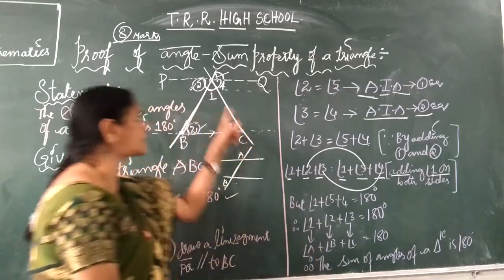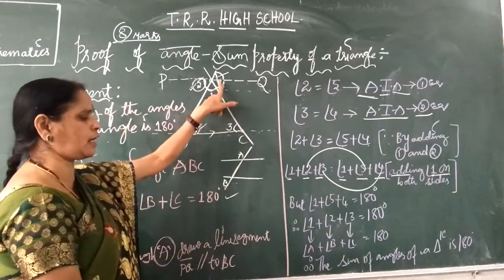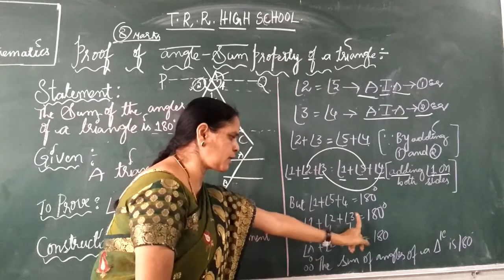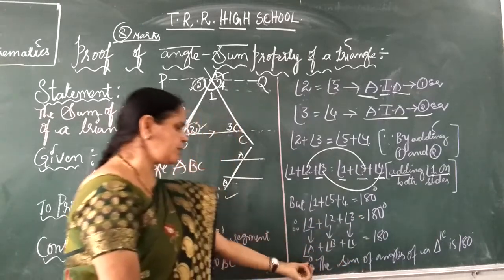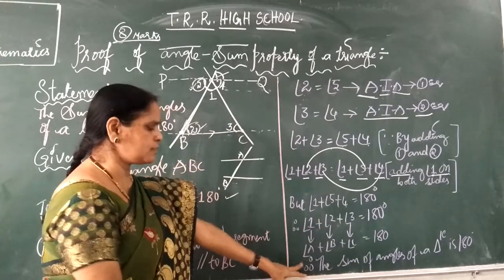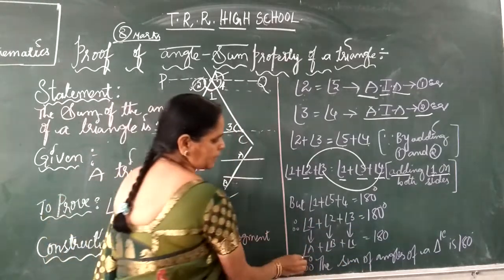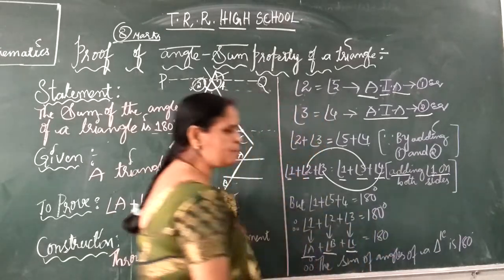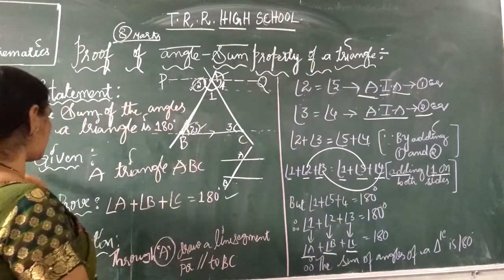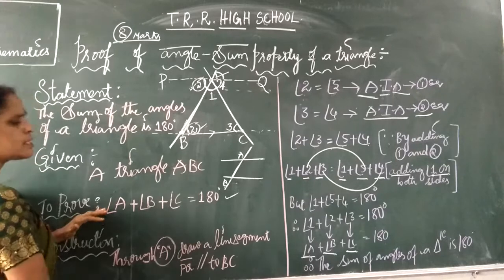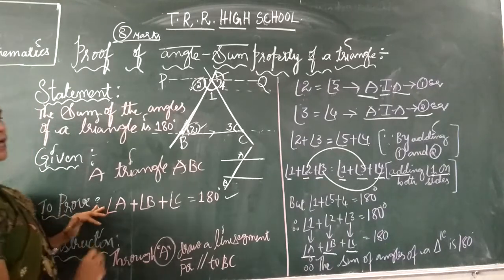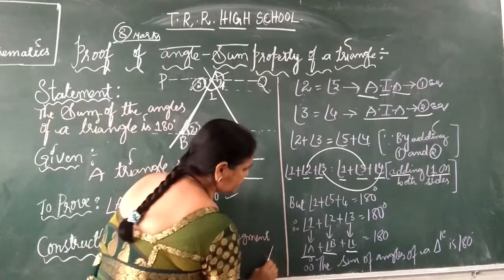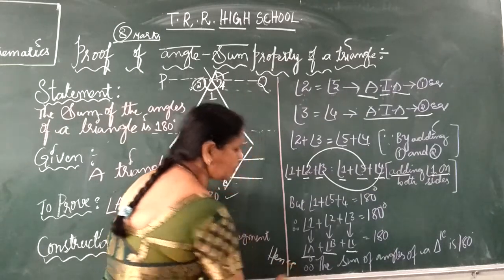Angle 1 is nothing but angle A. Angle 2 means angle B. Angle 3 means angle C. So here we prove that angle A plus angle B plus angle C is equal to 180 degrees. That is our proof — the sum of three angles is equal to 180 degrees. Hence proved.